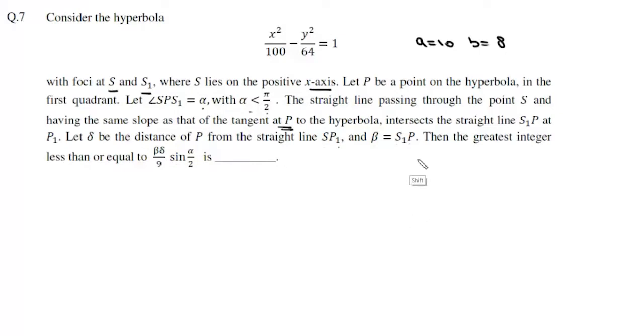So what we will do is we will draw this hyperbola. We have this hyperbola whose foci are at s and s1, and s lies on the positive x-axis. Now there is a point p.